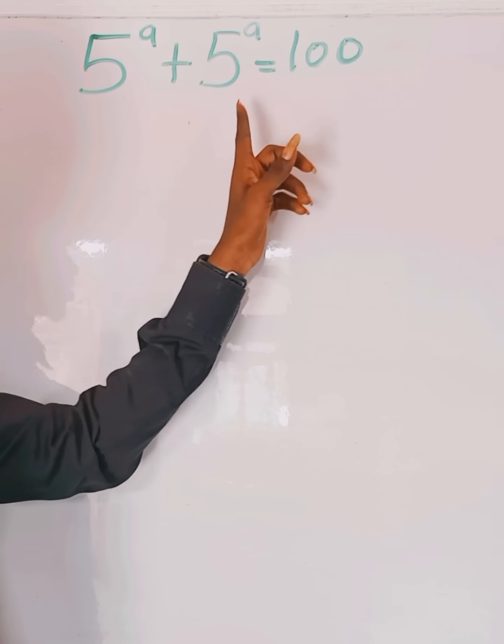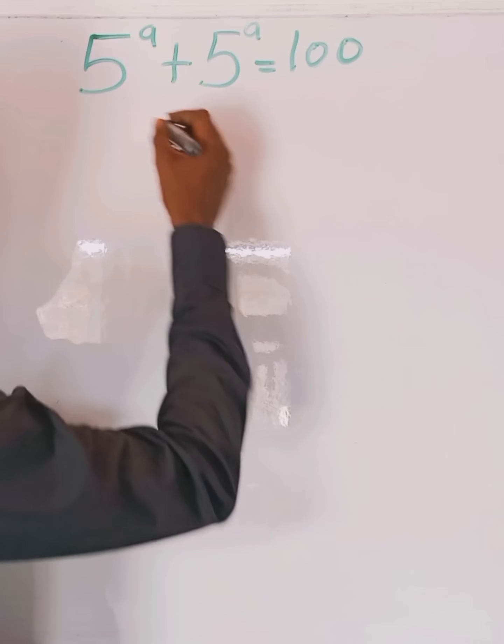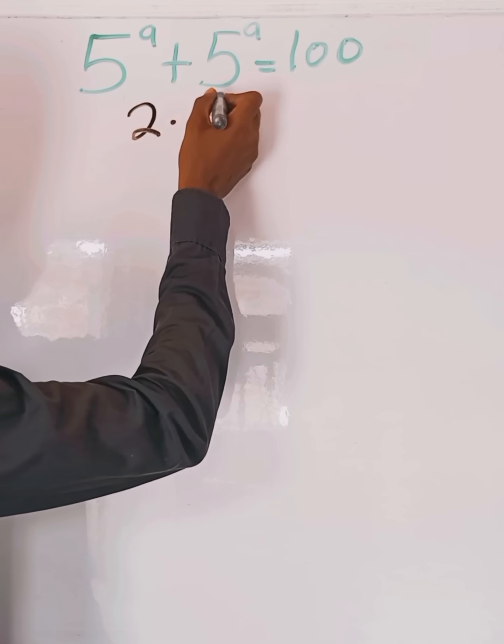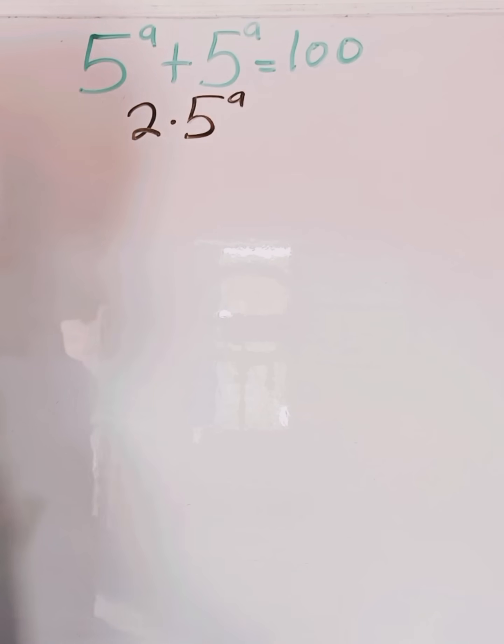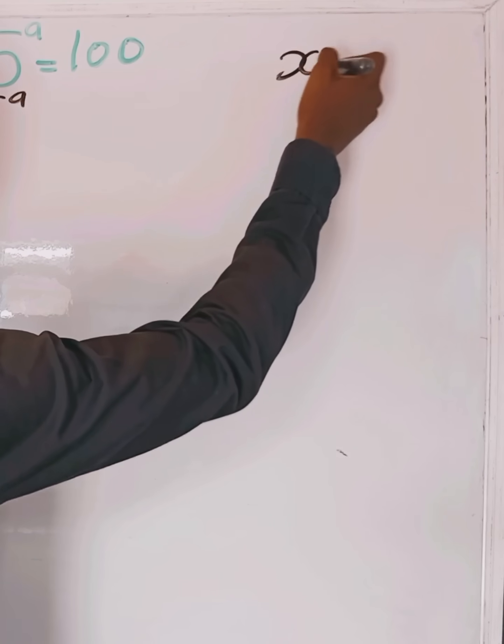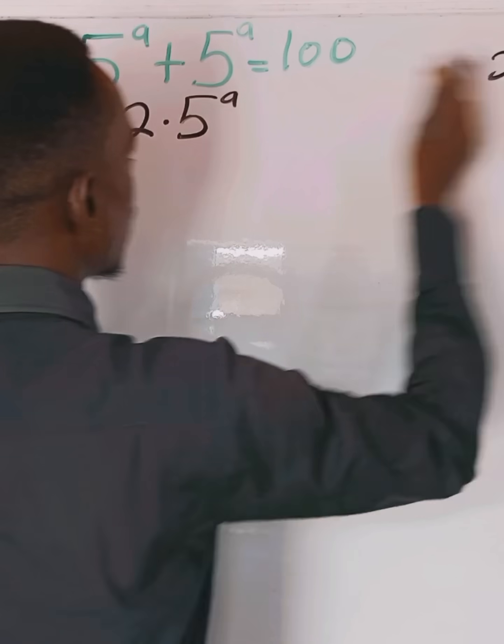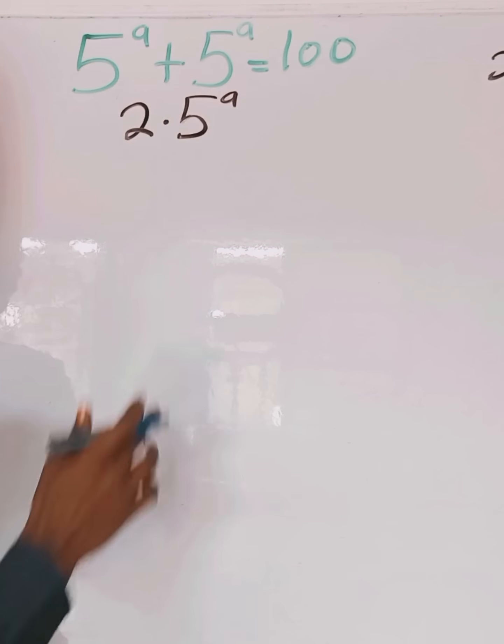Very simple. Let's go with step one. The first step: 5 to the power of a is the same thing as 5 to the power of a. So 5 to the power of a plus 5 to the power of a gives us 2 times 5 to the power of a, just like the same way x plus x gives us 2x because they are exactly the same.